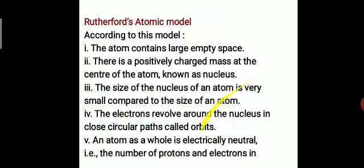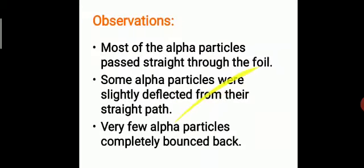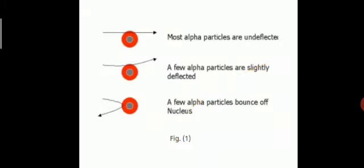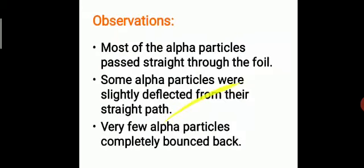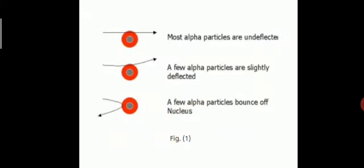His atomic model states: first, the atom contains large empty space — only because of the empty space were the alpha rays able to pass through undeflected. Just as you can only walk inside a classroom if there is space, the rays could pass through because of the empty spaces. Second, there is a positively charged mass at the center of an atom known as the nucleus.